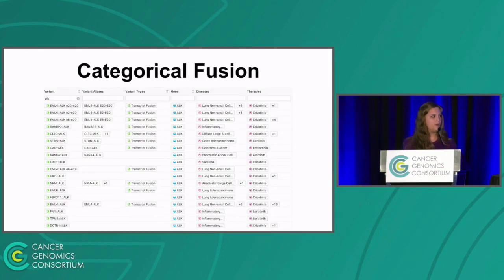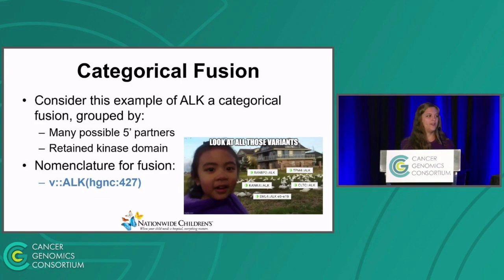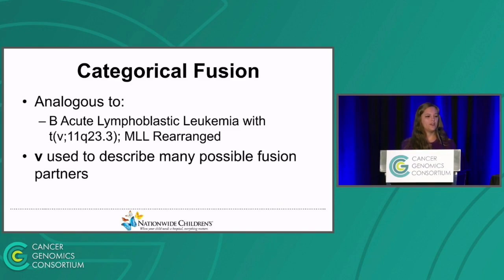Next, let's do a categorical fusion example. I've loaded up CIViC, and I'm curious about ALK fusions — there are a ton of different variants and potential partners. We consider this an example of a categorical fusion grouped by its shared attributes, which in this case are many possible 5 prime partners and a retained kinase domain. The nomenclature for this fusion is shown here — this idea of multiple possible gene partners is represented by a V. This is analogous to B-cell acute lymphoblastic leukemia with an MLL rearrangement, one of the documented cases where this V is used to describe many possible fusion partners.